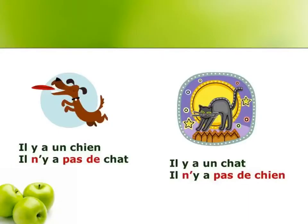Here are a couple of other examples. Il y a un chien — there is a dog. Il n'y a pas de chat — there is no cat. And under the second picture: il y a un chat — there is a cat. And the final sentence: il n'y a pas de chien — there is no dog.